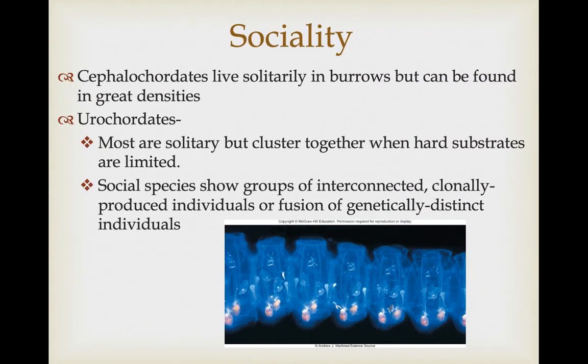Cephalochordates live solitarily in burrows and can be found in great densities, but there is no true social system. Most urochordates are also solitary, but can be found in clusters when suitable hard substrate for attachment is limited. There are some social species of urochordates that show interconnected, clonally produced colonies through asexual binary fission, and in some cases genetically distinct individuals cluster together to form colonies.